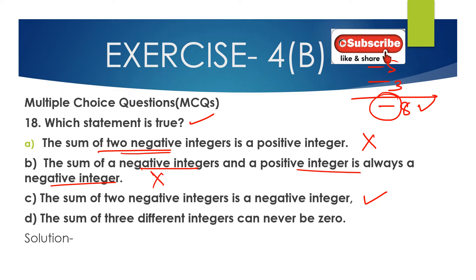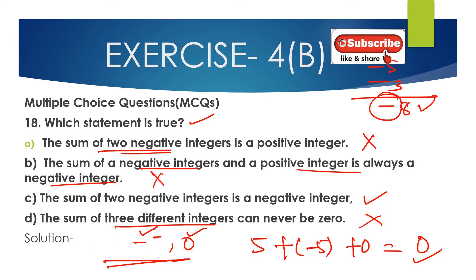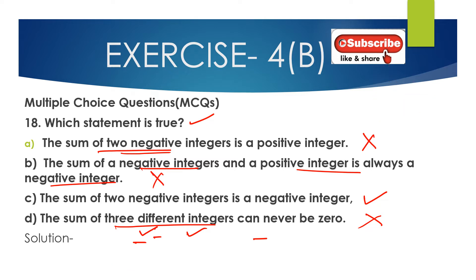Option D: the sum of three different integers can never be 0. This is false, because it can be 0. For example, 5, minus 5, and 0 are three different integers, and 5 plus minus 5 plus 0 equals 0. So option D is false. Therefore, option C is the correct answer.